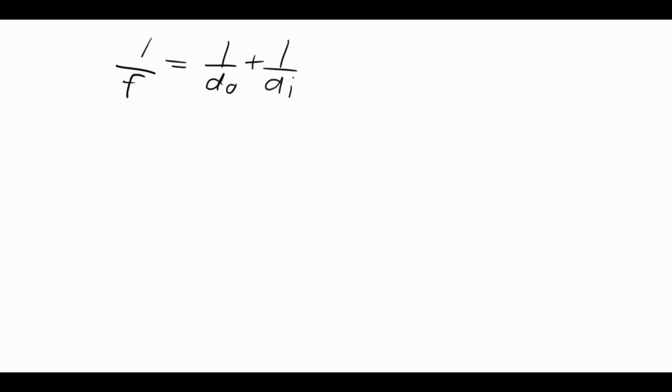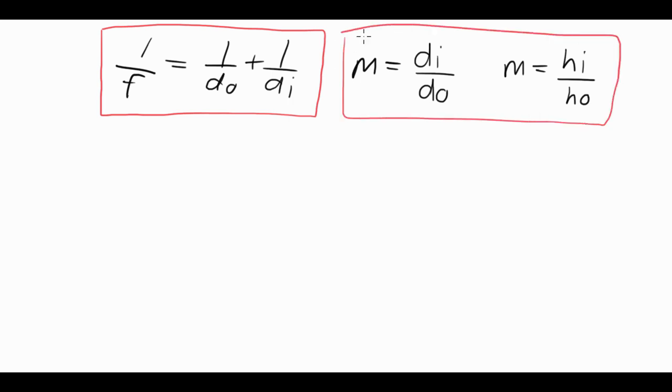It basically works exactly the same way as it does for mirrors. You've got to be aware of the same important things like when the focal length is negative or positive and what the signs mean. In addition, you can apply the formula m equals di over do for magnification, and m equals hi over ho, which is image height divided by object height. These are the three formulas for lenses and mirrors, concave and convex.